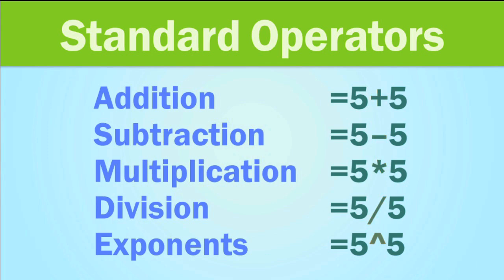You're probably used to seeing equations like 5 plus 5 equals, but in Excel the equal sign comes first. This is because the cell itself contains, or is equal to, the formula and its value.